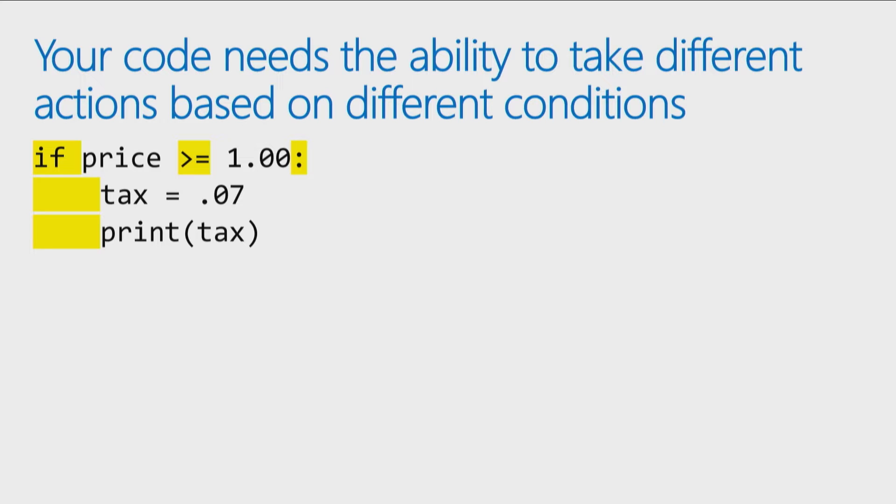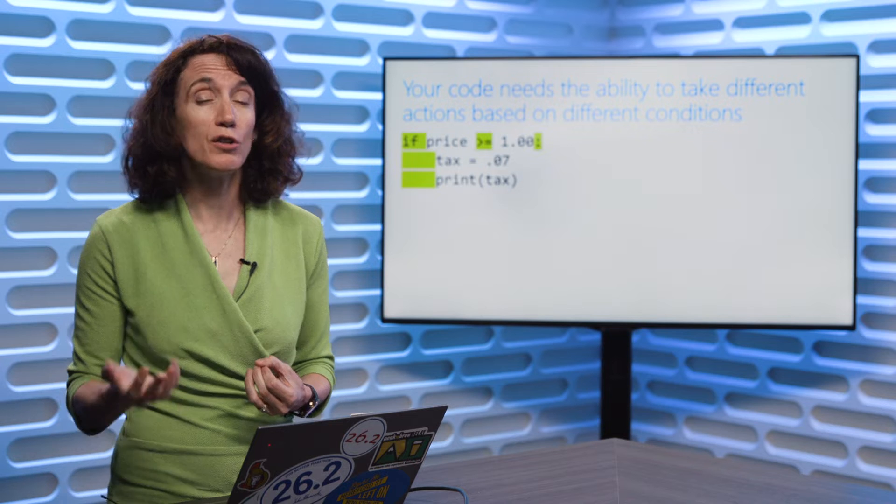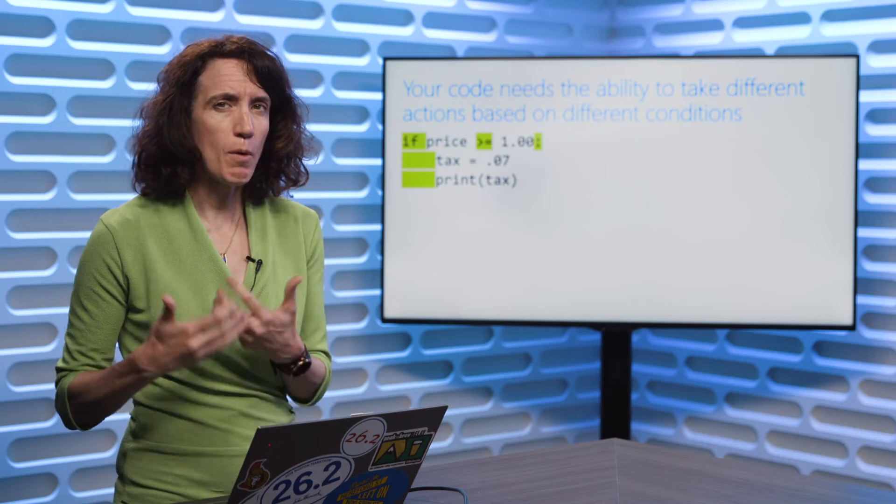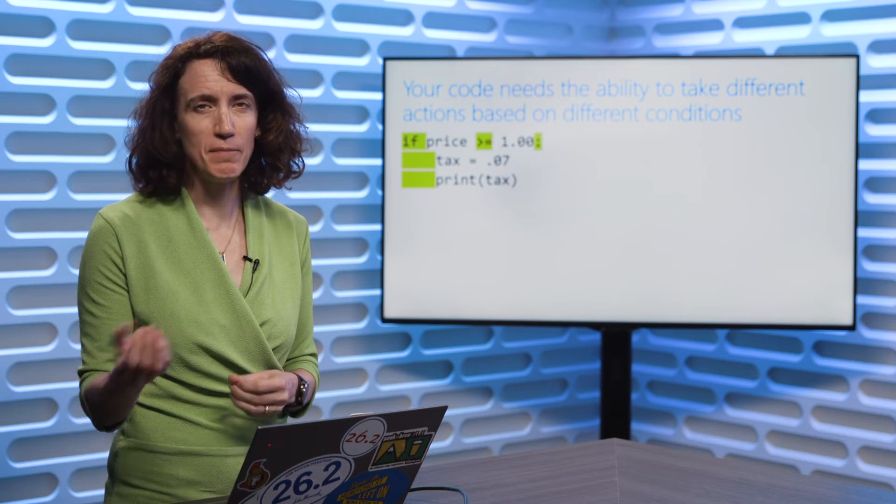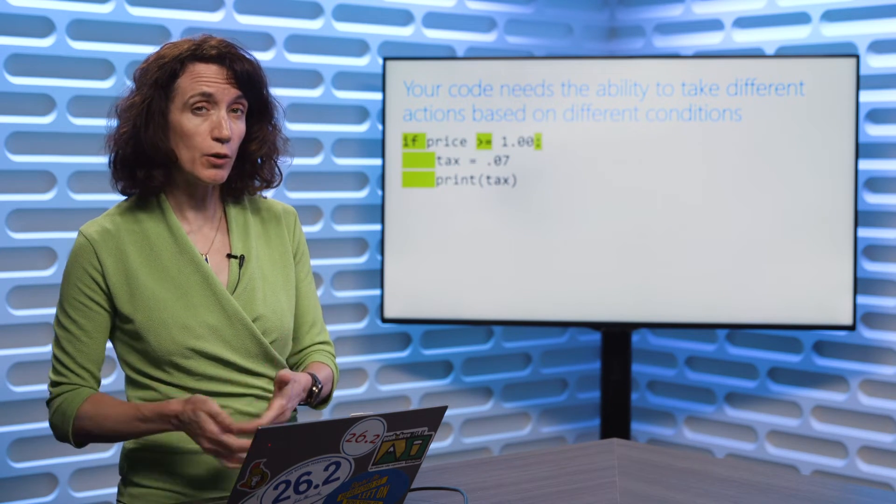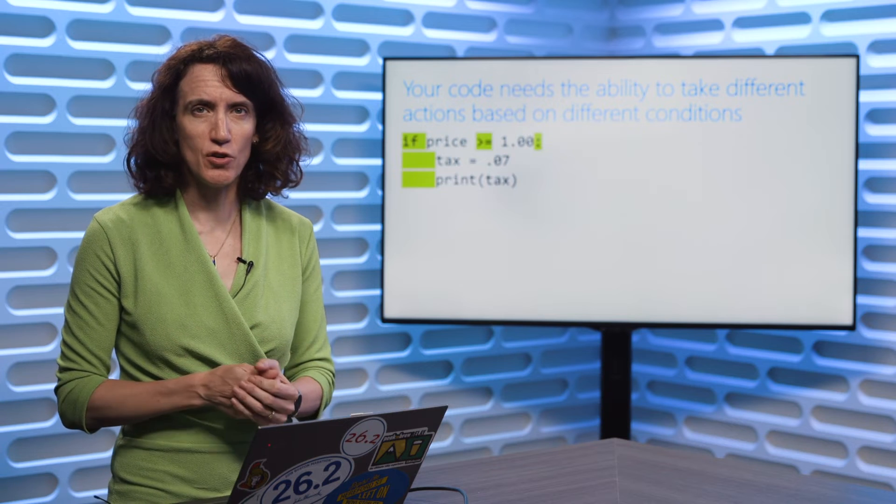One of the more common situations: in Canada, we have different tax levels depending on which province you live in. In the US, it depends on which state. It also depends on the price. If you're buying fast food at a restaurant in Canada, if anything costs less than $1, you don't pay any tax on it. So when we're calculating tax, we say if the price is over $1 or equal to $1, then we charge a certain amount of tax.